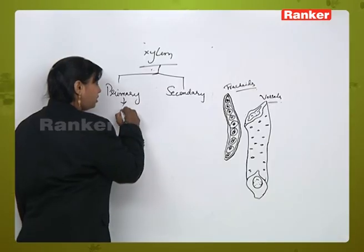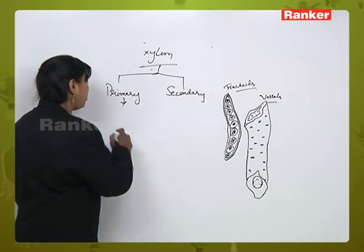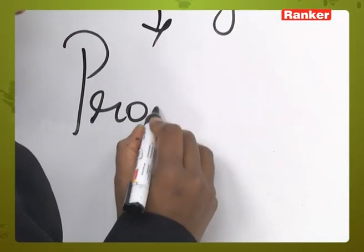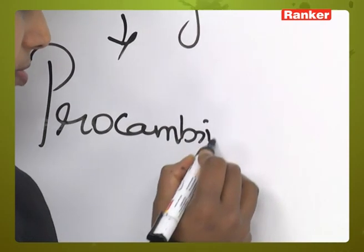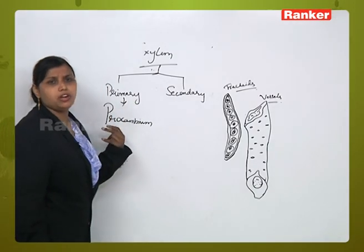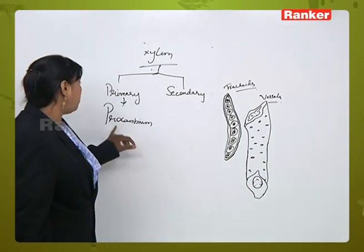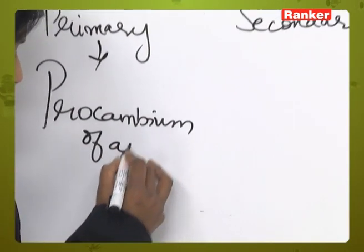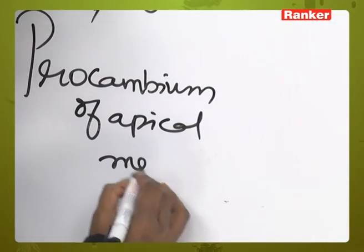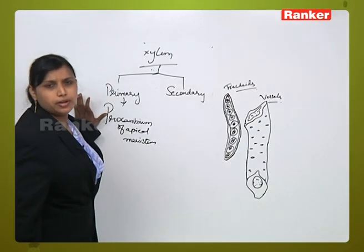Where do we get the primary xylem from? The origin of primary xylem is occurring from the procambium of the meristematic cells. If the initiation of the xylem tissue occurs from the procambium of the apical meristem, then this type of xylem is called primary xylem.